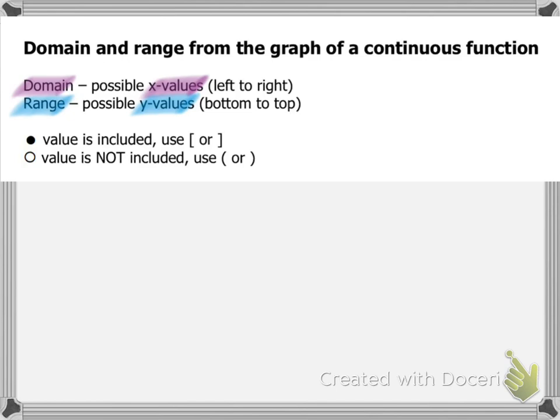If you have trouble remembering which one is x and which one is y, notice that domain and range are in alphabetical order, and so are x and y. It's also important to note if your graph includes a filled-in circle or an open circle. The filled-in circle means that value is included, so we use brackets. An open circle means the value is not included, so we use parentheses.